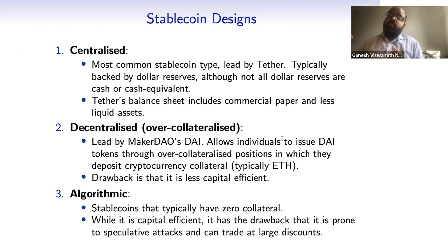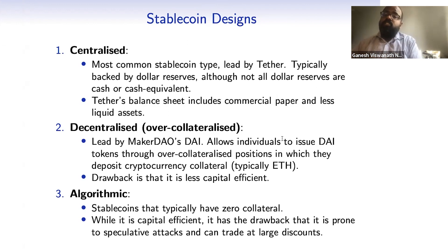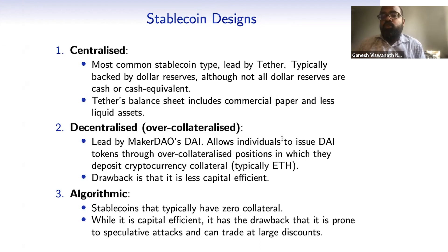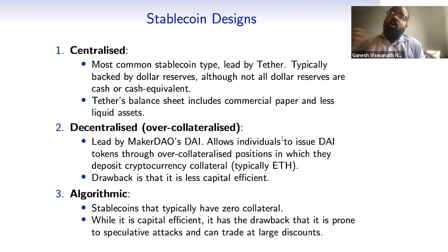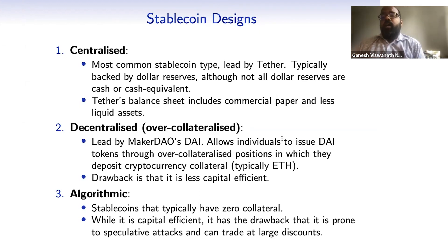The reason for over-collateralization is that there's a chance that ETH may collapse in value, so you need to over-collateralize your position as insurance against default. This is a way to try to ensure peg stability — by increasing the amount of collateral you need to post. But if you are depositing a lot of ETH collateral and then borrowing only a fraction as DAI, it's very capital inefficient — you're not able to generate that much in stablecoins.